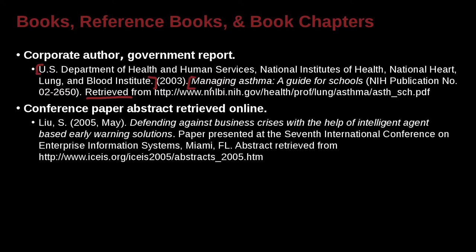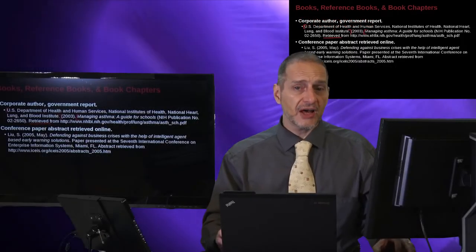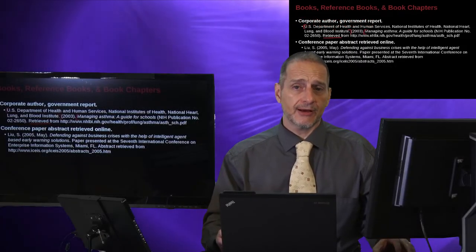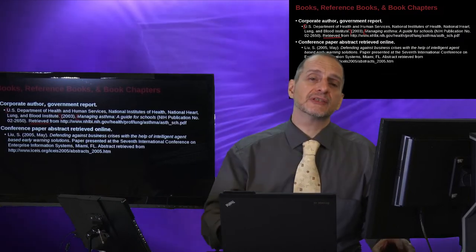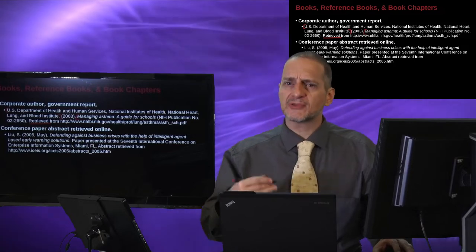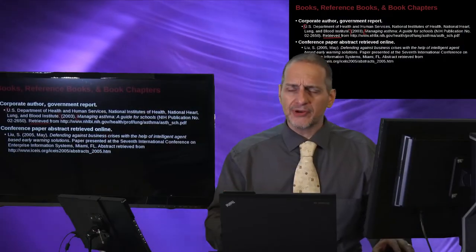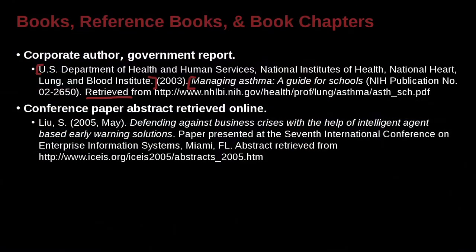Another citation type that's quite popular is the conference paper or conference abstract. If you're using something like Google Scholar, you can actually find conference papers and abstracts. You can also go to conference websites and find their abstracts. Maybe you find some information in an abstract that's interesting and useful for your research — but it's not really a paper. So how would we cite that, or write it in our reference list?